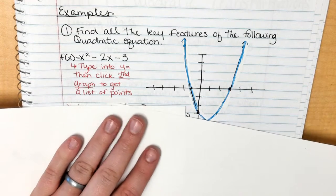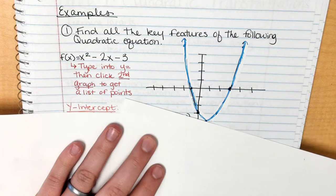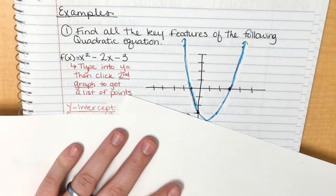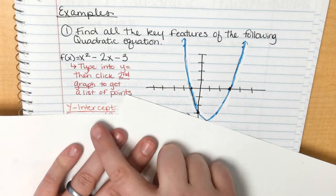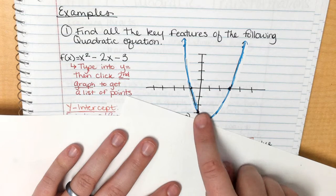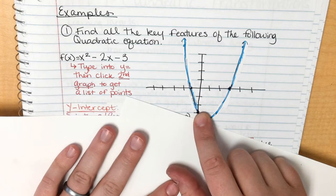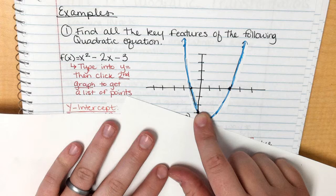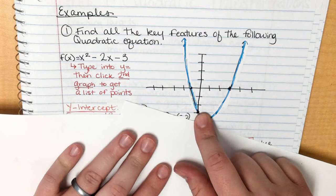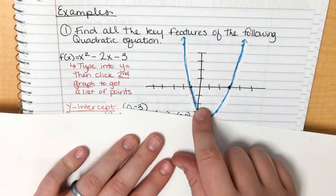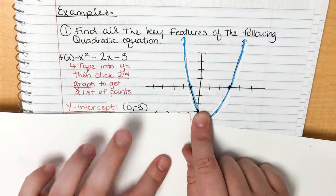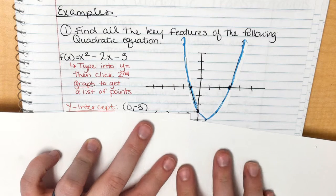Now let's talk about the key features. The y-intercept is where the graph crosses the y-axis, which is at negative 3. However, we write the y-intercept as a coordinate point, not just the number. So the y-intercept is written as (0, −3).